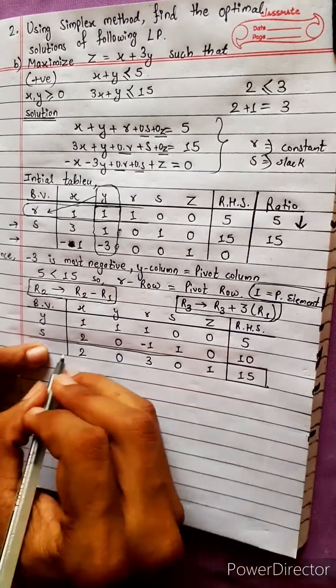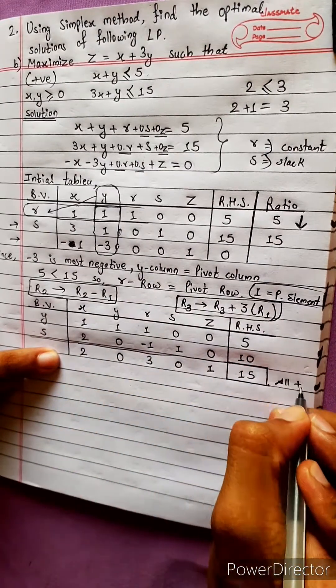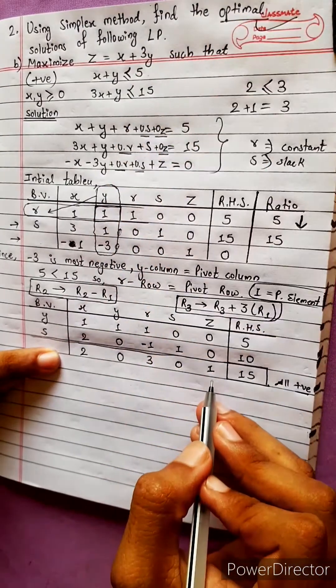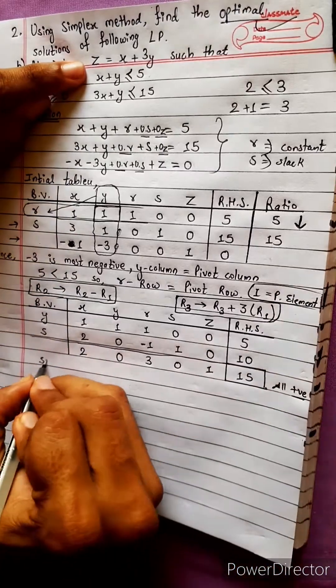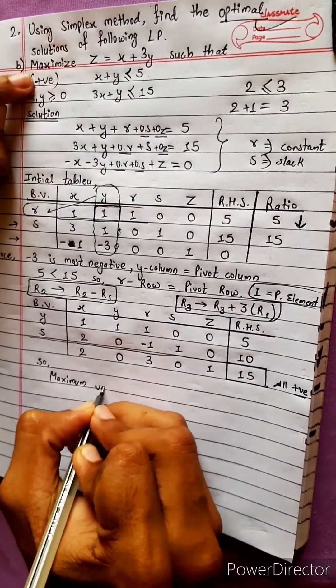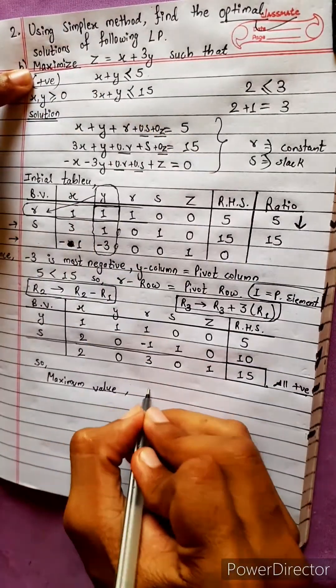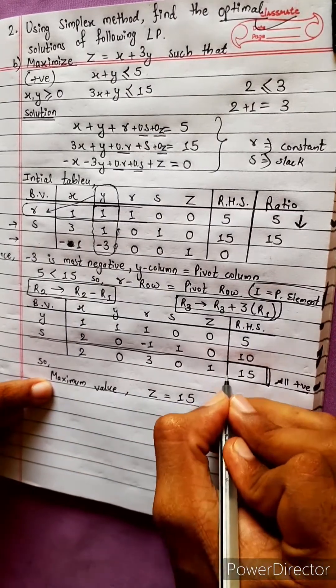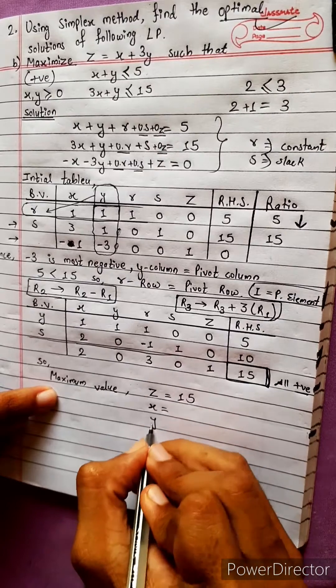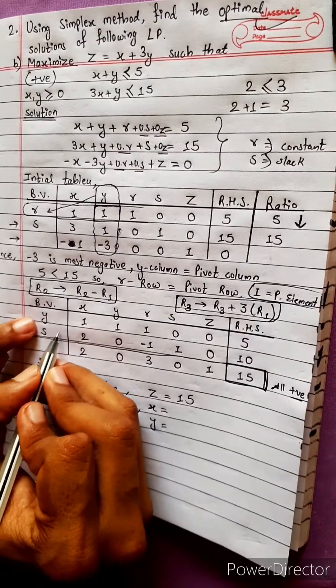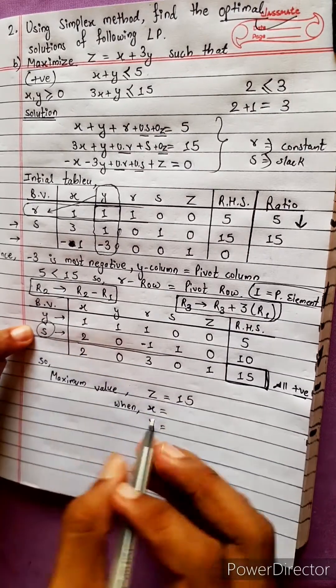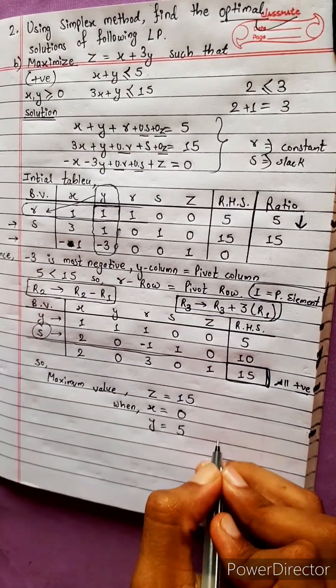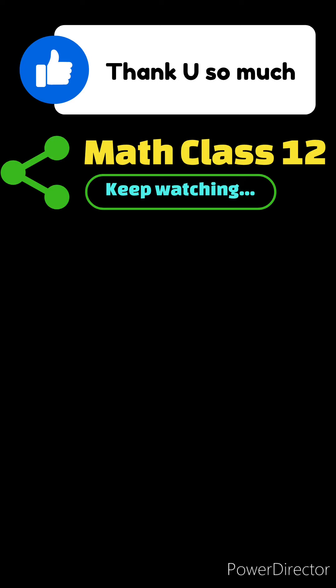The third row is now all positive, so the optimal solution is obtained. The maximum value of Z equals 15. When we read the solution: X equals 0, Y equals 5. So the optimal solution is: maximum Z equals 15, at X equals 0 and Y equals 5.